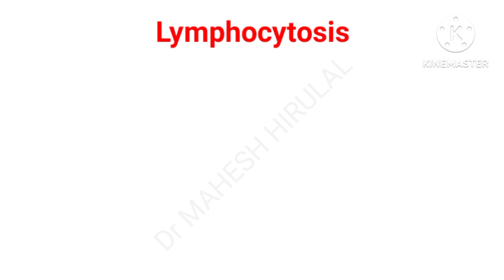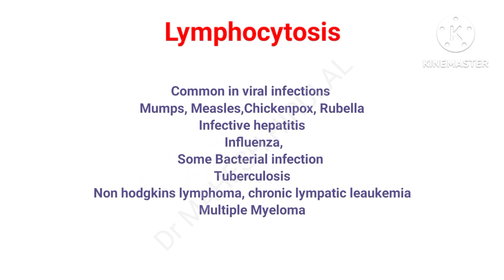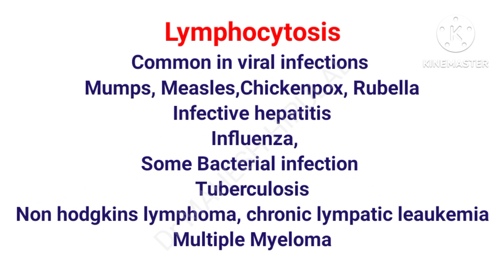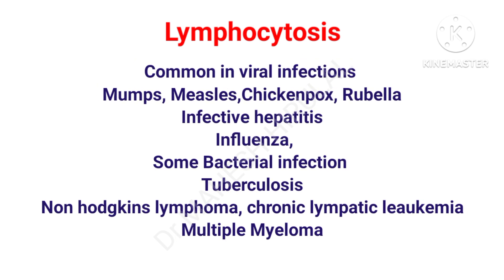Increase in lymphocytes is called lymphocytosis, which is the most common indication of viral infections. Viral infections like mumps, measles, chickenpox, rubella, infective hepatitis, and influenza can cause increased lymphocytes. There are some exceptional bacterial infections like tuberculosis where we can also see an increase in lymphocytes.